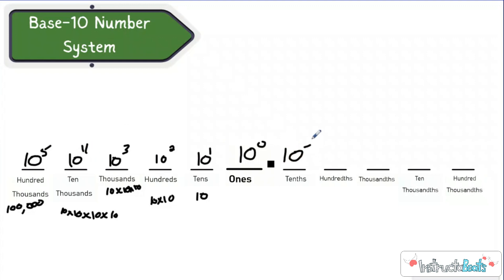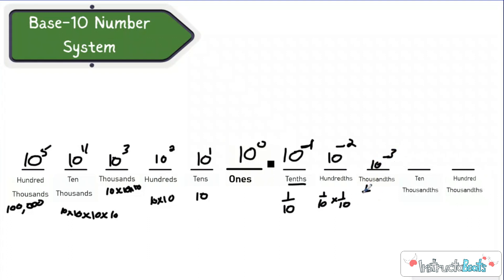And of course we have ten to the negative first, which would be one-tenth, hence the tenths place. Ten to the negative second power, which would be one-tenth times one-tenth. Ten to the negative third power — one-tenth times one-tenth times one-tenth. Ten to the negative fourth power — one ten-thousandths. And then ten to the negative fifth power.